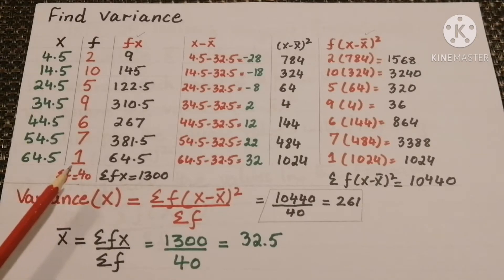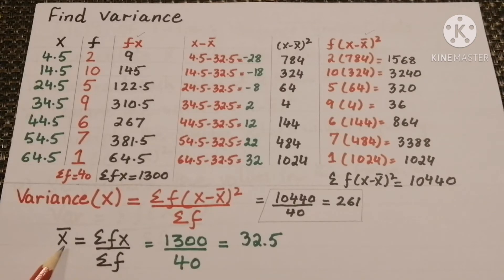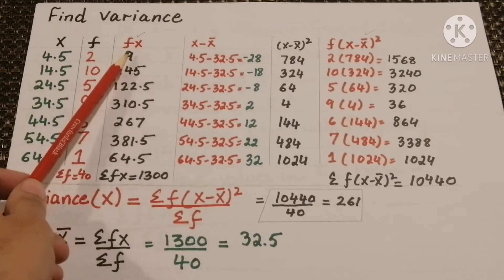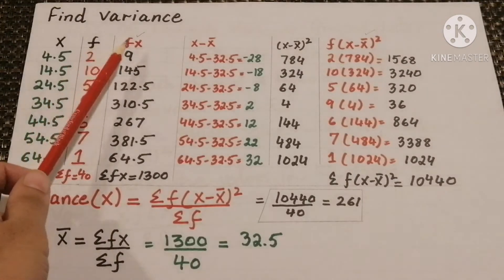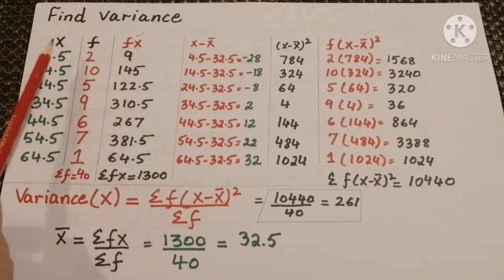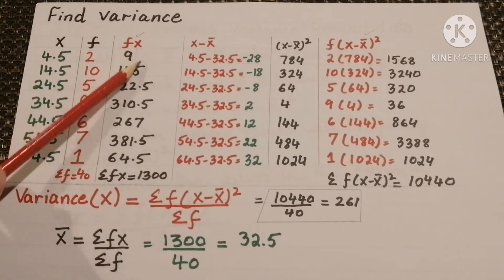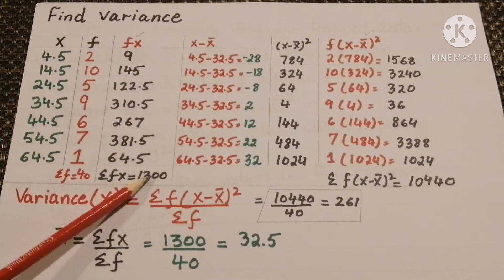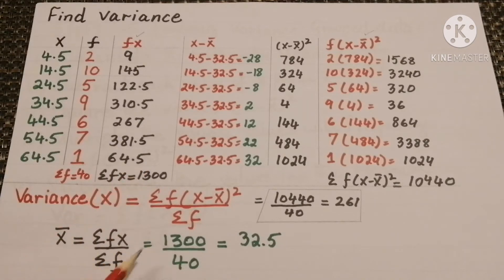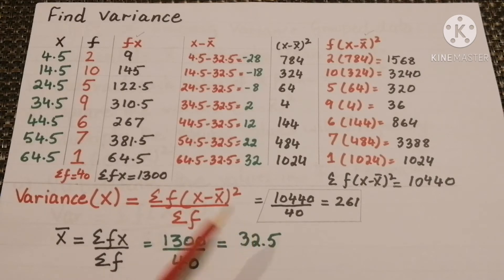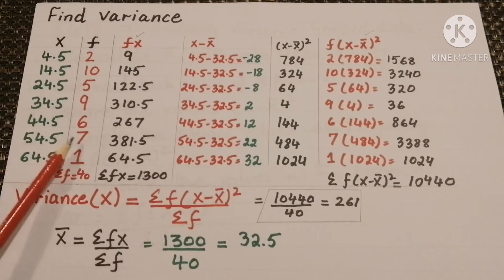To find the variance of this frequency distribution, we first calculate x̄, the arithmetic mean, using the formula x̄ = sum of fx divided by sum of f. We make a column of fx by multiplying the f column with the x column. We get sum of fx = 1300. Substituting: 1300 divided by 40 gives arithmetic mean x̄ = 32.5.